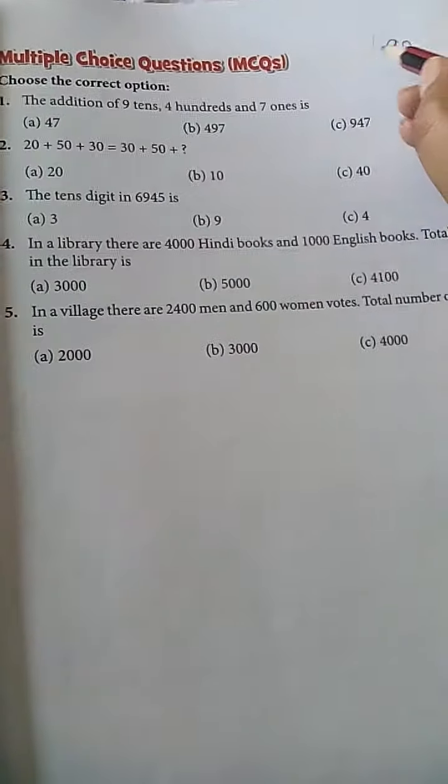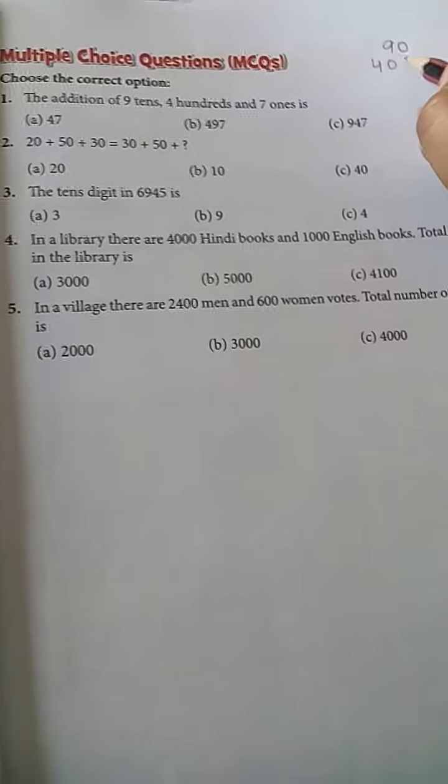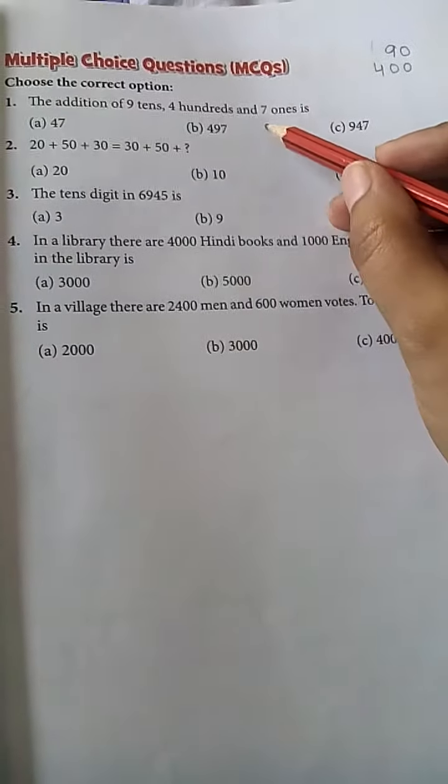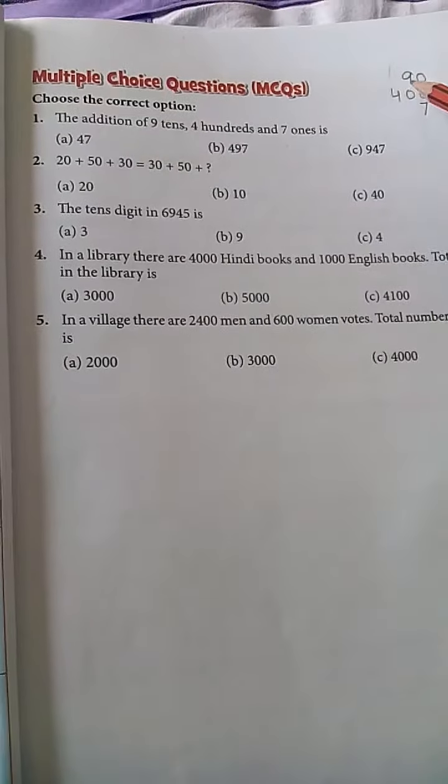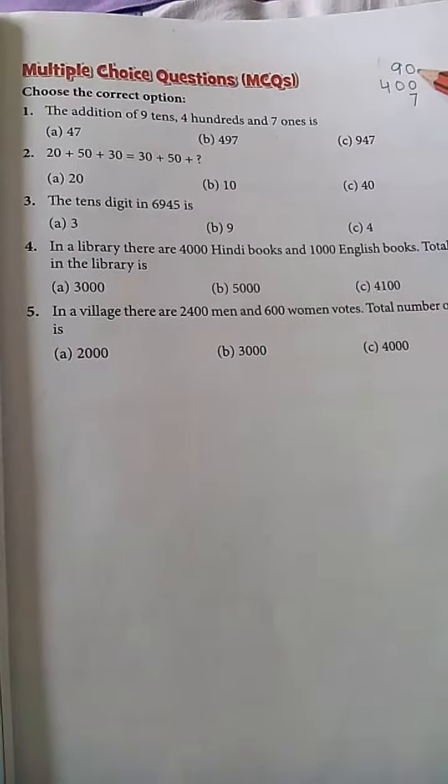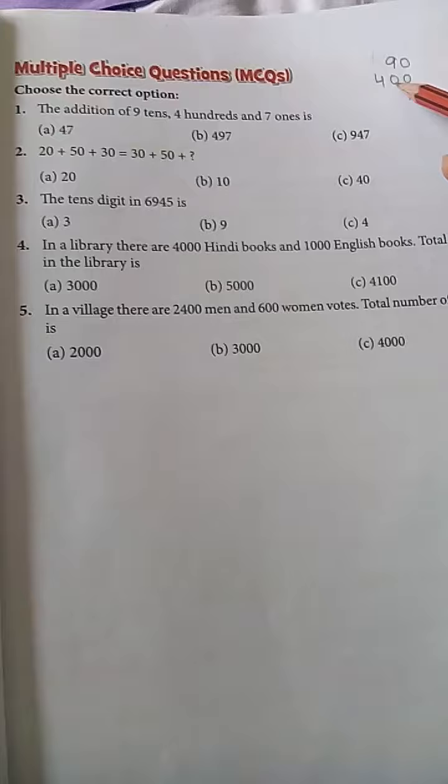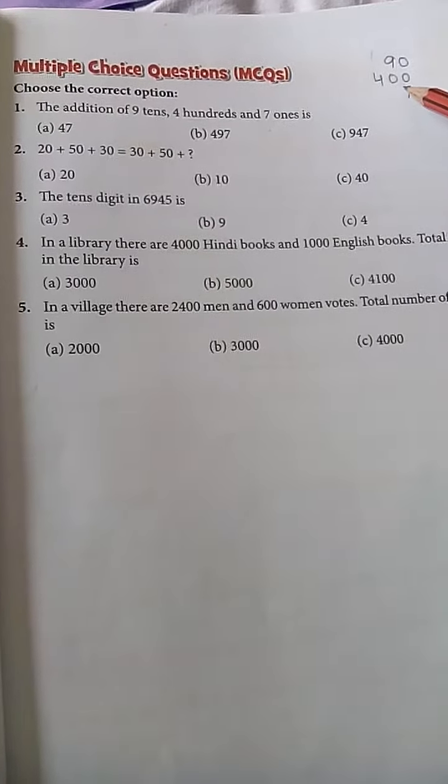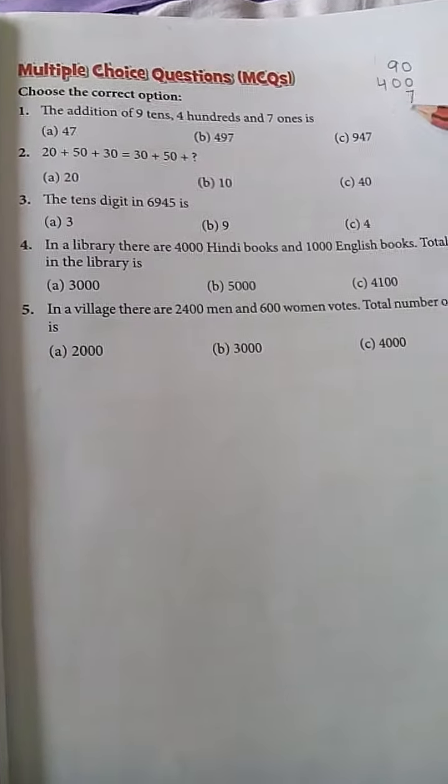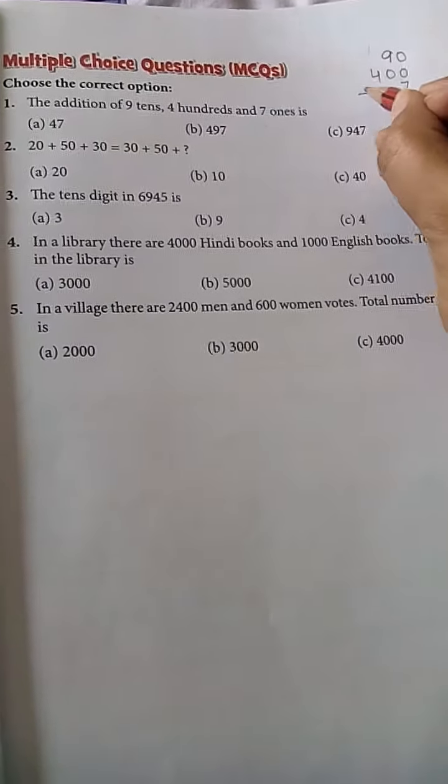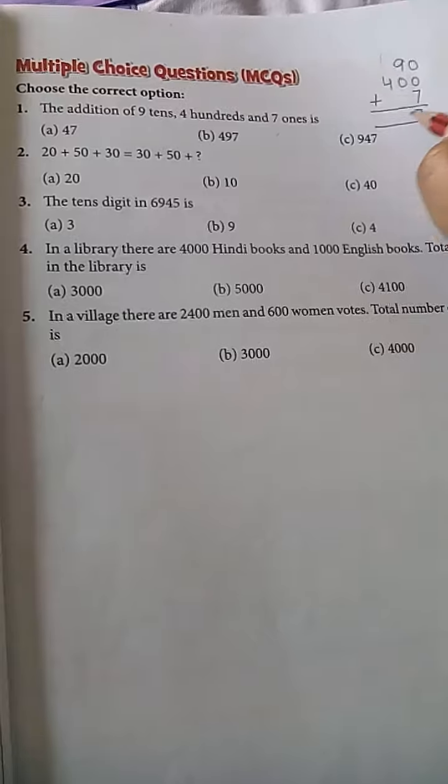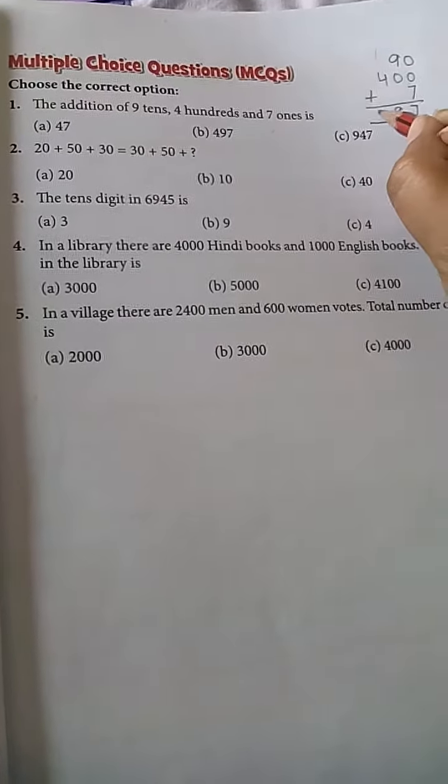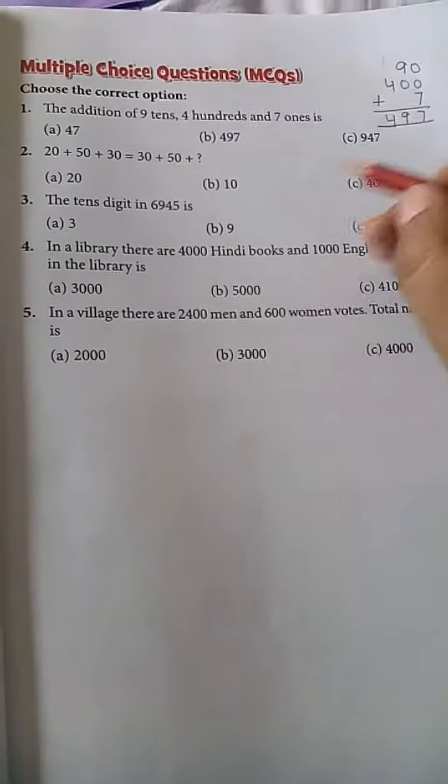4 hundred means 400. In the ones position, write 7. In the tens position, write 1, 0. In the hundreds position, write 2, 0. In the ones position, write as is. When we do the addition, we will get the result: 7, 9, and 4, which means